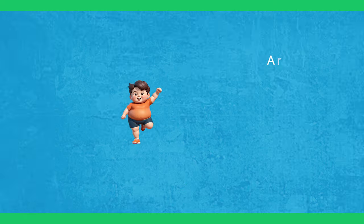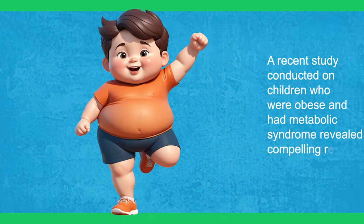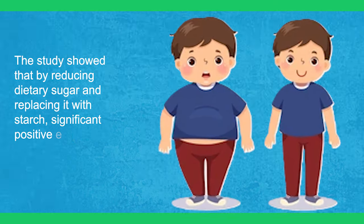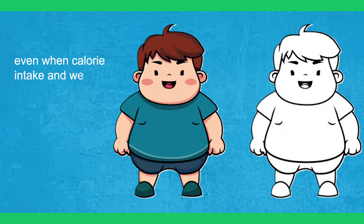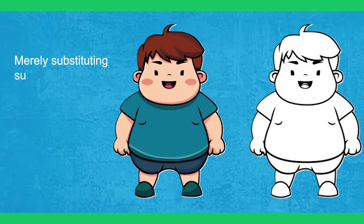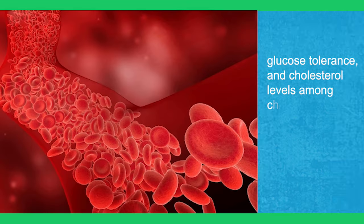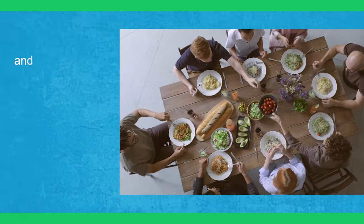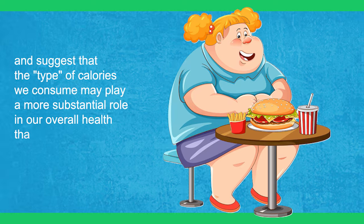A recent study conducted on children who were obese and had metabolic syndrome revealed compelling results. The study showed that by reducing dietary sugar and replacing it with starch, significant positive effects on metabolic parameters could be observed even when calorie intake and weight remained constant. Merely substituting sugar with starch led to improvements in blood pressure, glucose tolerance, and cholesterol levels among children with metabolic syndrome. These findings challenged the conventional belief that calories are the primary factor in maintaining a healthy weight, suggesting that the type of calories we consume may play a more substantial role in our overall health than previously believed.